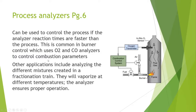The second application is process analyzers. Gas analyzers can be used to control the process. The key requirement is that the reaction time of the analyzer has to be faster than the process — it must react to changes quickly enough to make a difference. A common application is burner control, measuring oxygen and carbon monoxide to control combustion parameters for efficiency and safety. Other applications include maintaining product quality in fractionation or distillation processes.